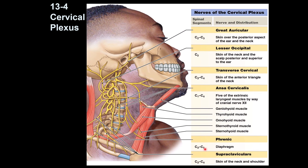A majority of the cervical plexus branches are sensory, but there are two important motor nerves as well. The first sensory branch is the greater auricular nerve, which supplies the area around the ear — the posterior aspect of the ear and the neck area.